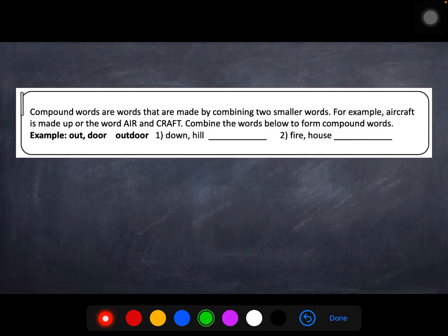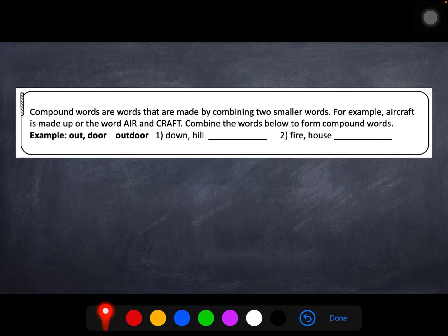Alright, number 1 on ELA side. Compound words are words that are made by combining two smaller words. For example, aircraft is made up of the words air and craft. Some of the words below, sorry, combine the words below to form compound words. So, for example, if we have out and door, we can smash those together and make the word outdoor. Doesn't work for just any two words. Okay? I can't take book and towel and make a book towel. That's nonsense. So, some of the things work and some of them don't. If I were to take down and hill, I would be making downhill. If I were to take fire and house, I would make firehouse, which is where the firemen hang out and keep all of their supplies while they're waiting to be called out to a fire.